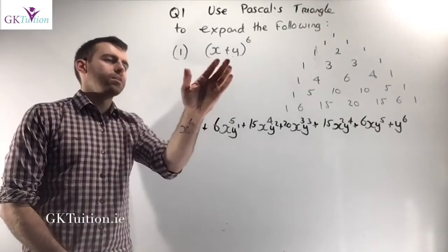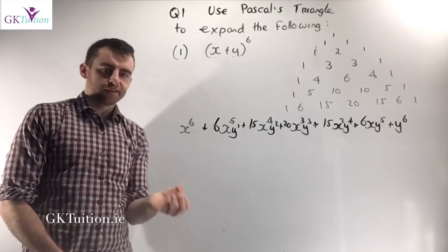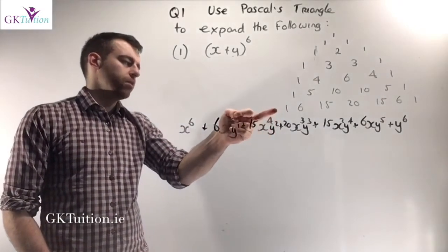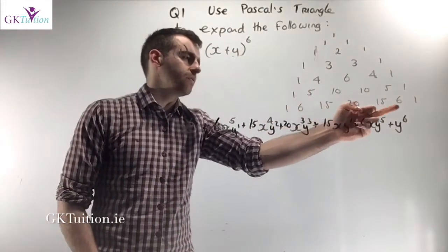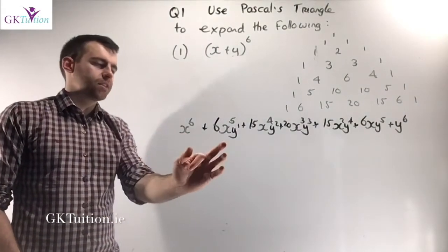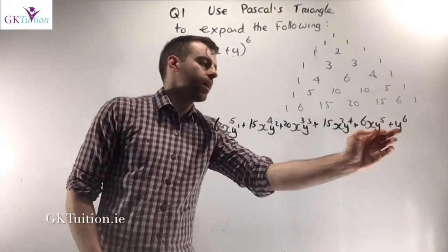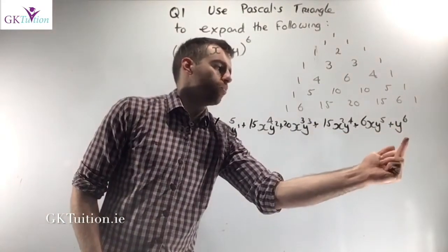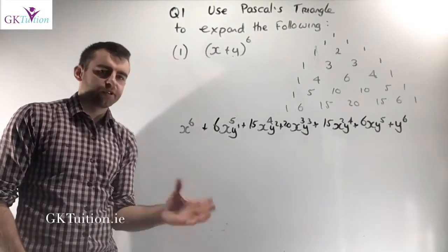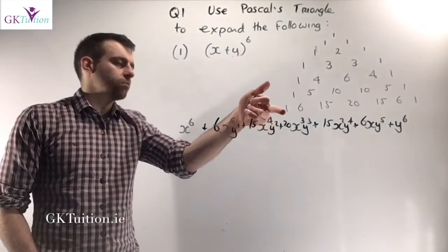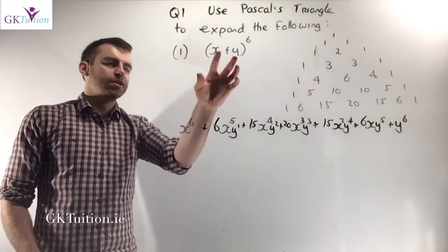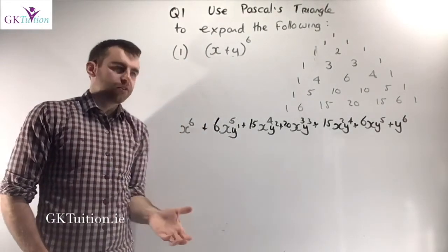For x plus y to the power of 6, there are going to be 7 terms in the expansion, so we need the seventh line of Pascal's Triangle: 1, 6, 15, 20, 15, 6, 1. The first term is x to the power of 6, then x to the power of 5, 4, 3, 2, 1, and the last term has no x. Going backwards, the last term is y to the power of 6, 5, 4, 3, 2, 1, and there's no y in the first term. The coefficients are 1, 6, 15, 20, 15, 6, 1, and since there's a plus, they're all pluses.